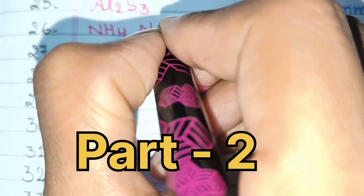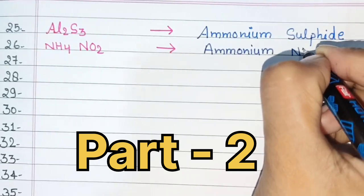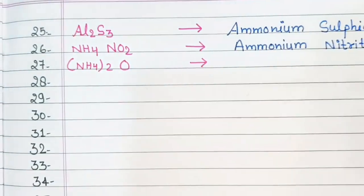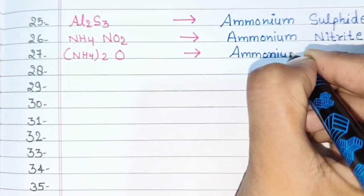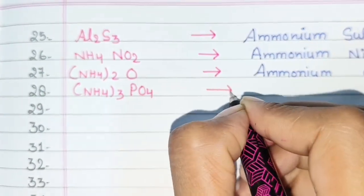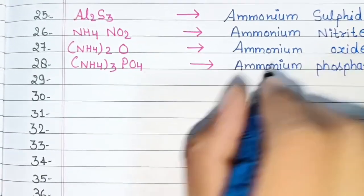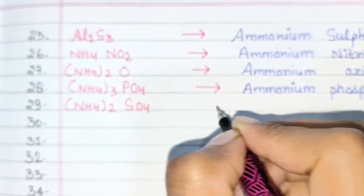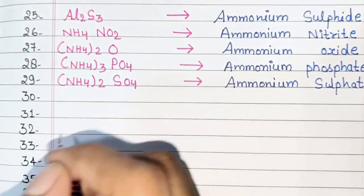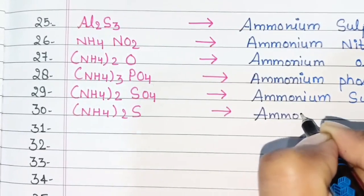NH4NO2, Ammonium Nitrite. NH4NO3, Ammonium Nitrate. NH4 compounds including Ammonium Sulfide.